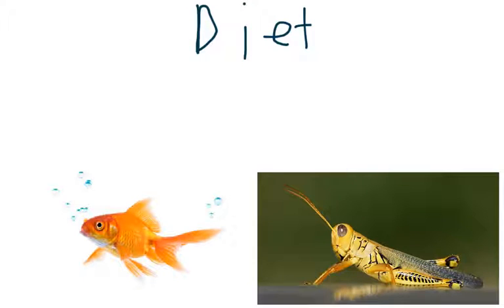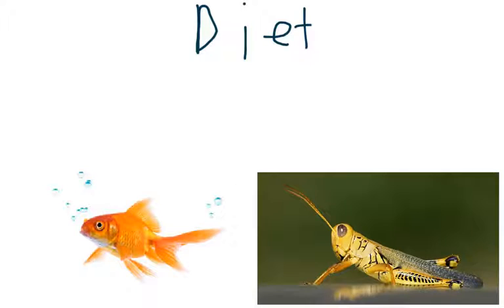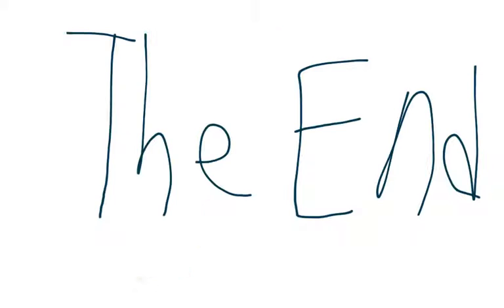This is what an owl eats. It can feast on small mammals, insects, fish, small birds, amphibians, and reptiles. An owl will swallow chunks of food. So sometimes hair or feathers get caught in their pellets. The end.